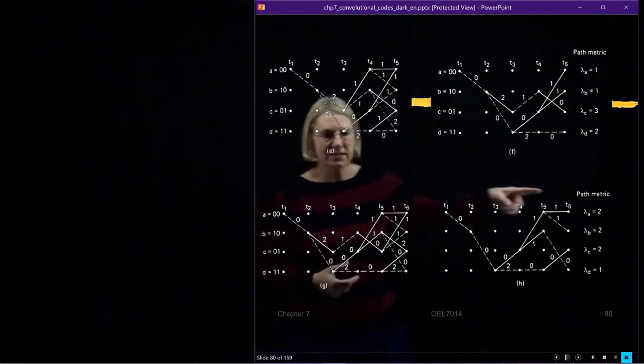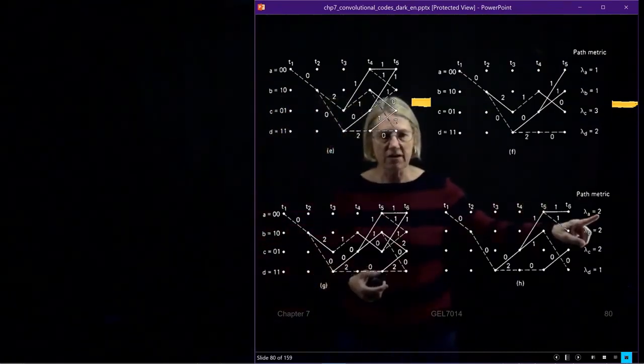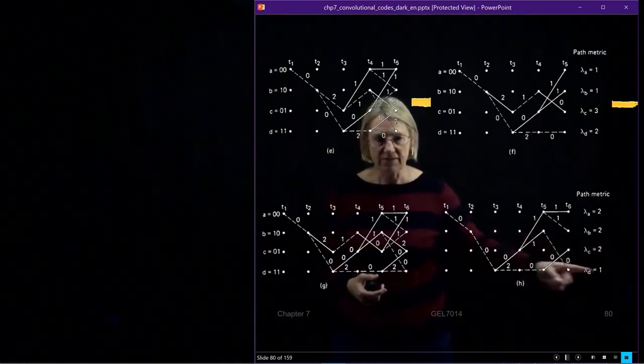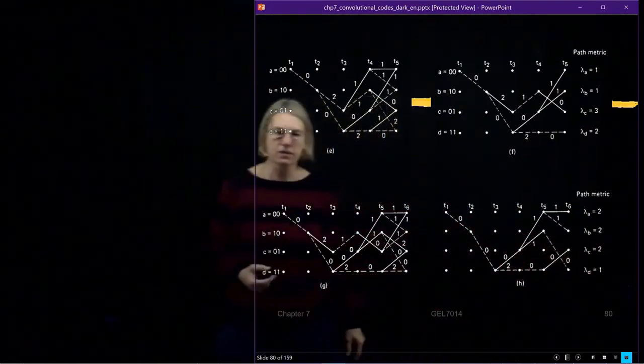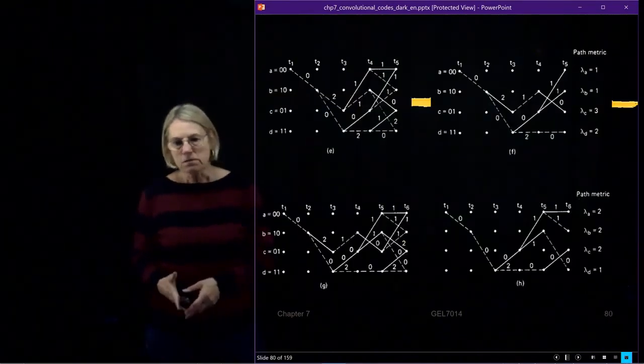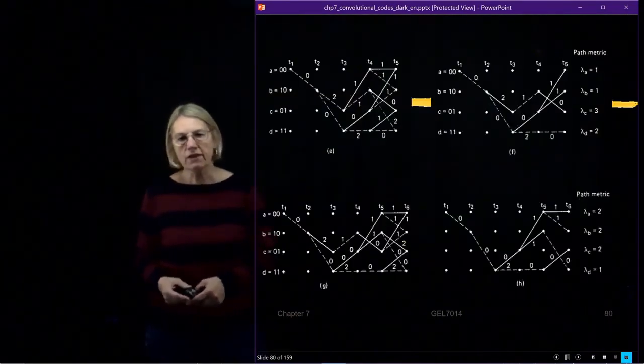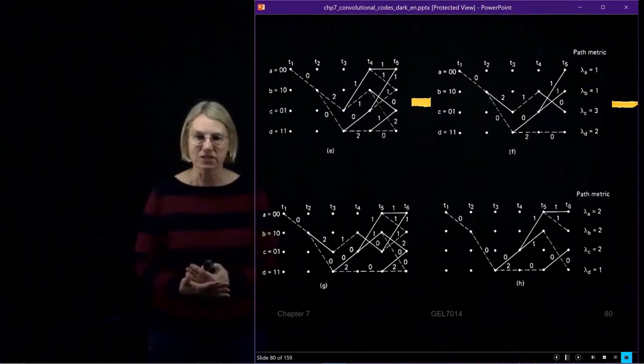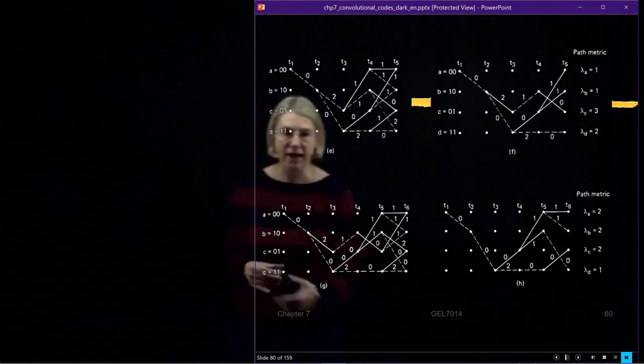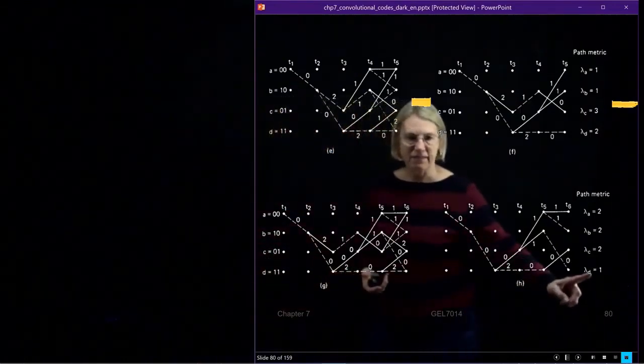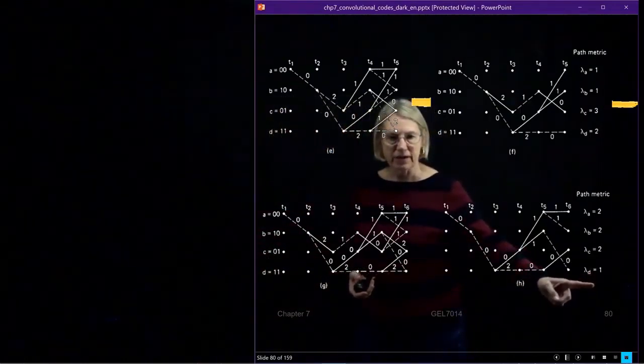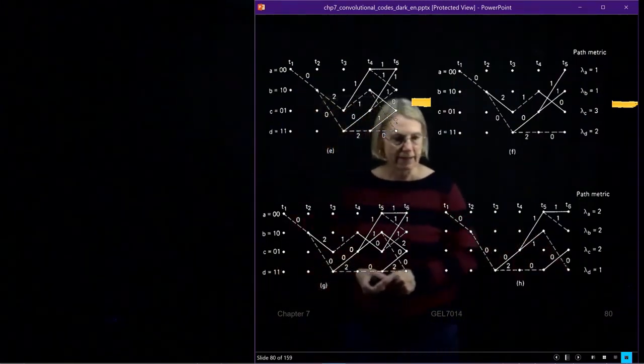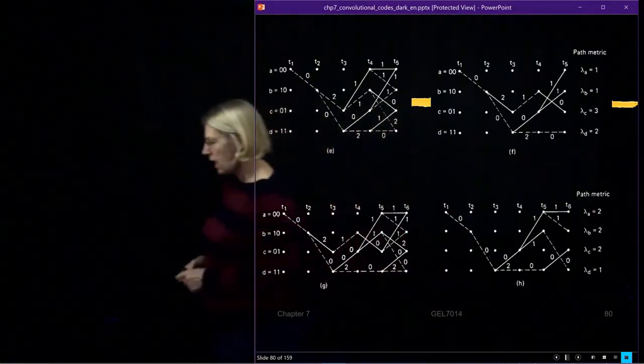So, if I ended up at state A, it's because there were two errors. If I arrive at state B, I assume there are two errors. And if I arrive at state D, it would have been because there was one error. So, if I had to make a decision, if I was forced now to make a decision on what path is the most likely path, I would choose the path with the smallest path metric. And I would go back here and choose that path as the final path, if you were forced.